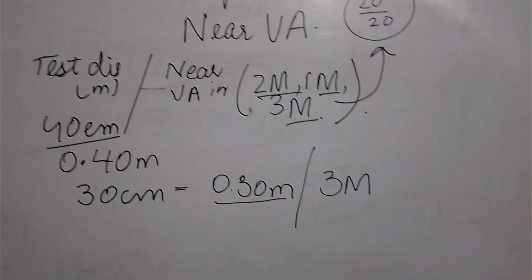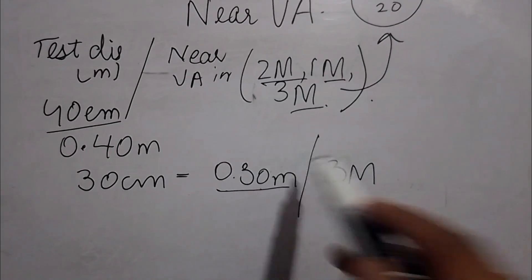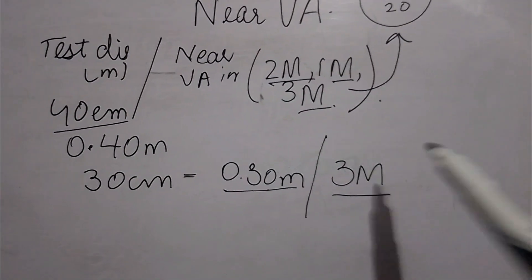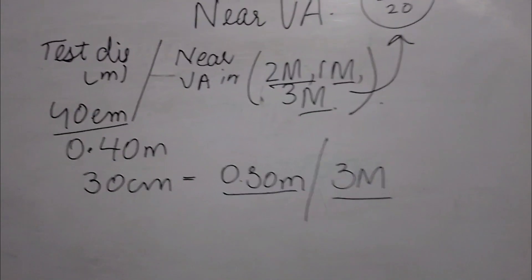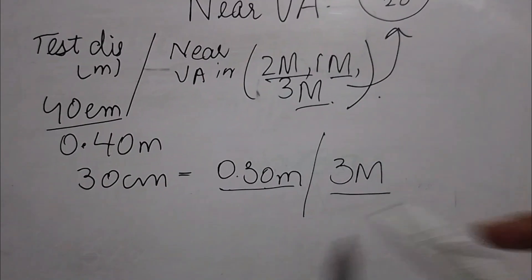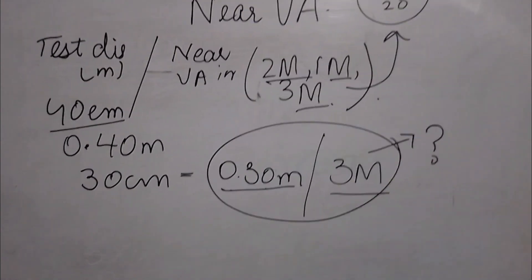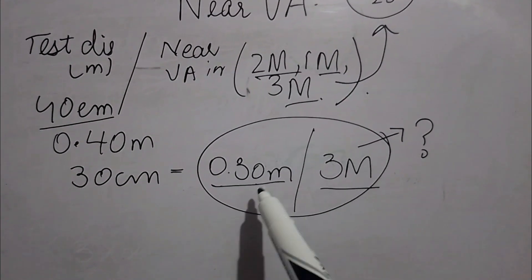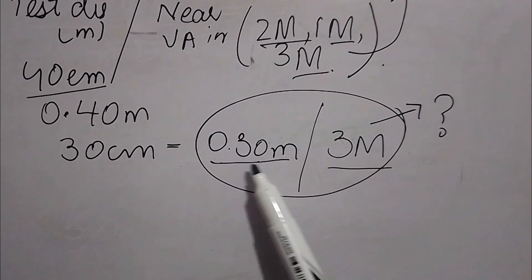Suppose we have a patient with a reading at 0.3 meters and his M-notation value, or he can only read up to 3M. We want to convert this into the reduced Snellen format. Visual acuity is recorded using the M-notation.